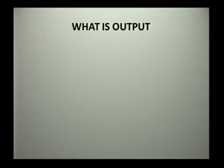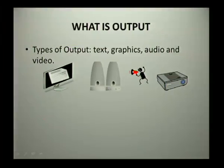What is output? Output is what you receive or what you get after you have entered your data and it has been processed. You get different types of output, just like you get different types of input. Types of output include output in the form of text, a graphic which is a picture, audio, or video.